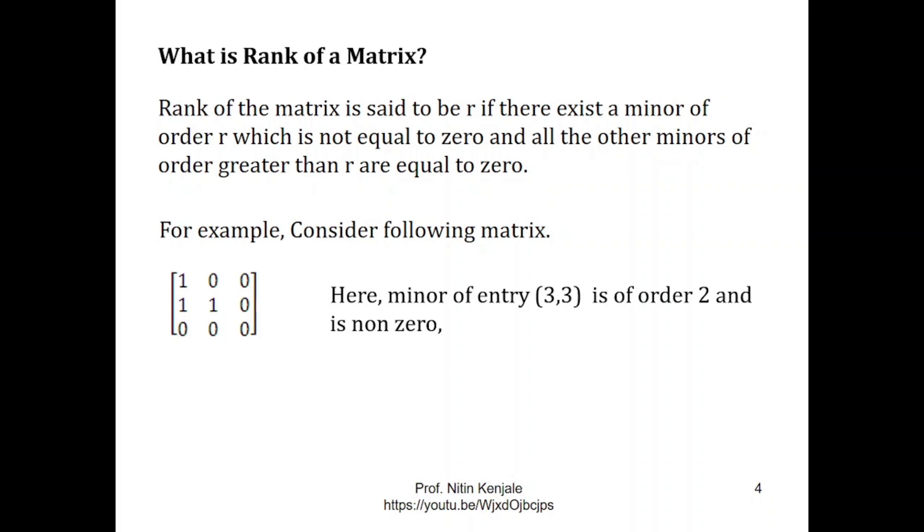So here for this entry we see that this sub matrix is of order 2 and its determinant is not equal to 0. Therefore this minor's value is not equal to 0 and all the other minors of order greater than this minor are equal to 0. That means the minor of order 3x3 here is the only matrix.